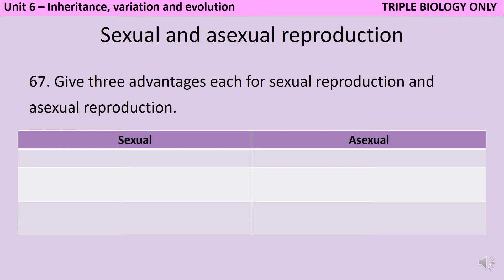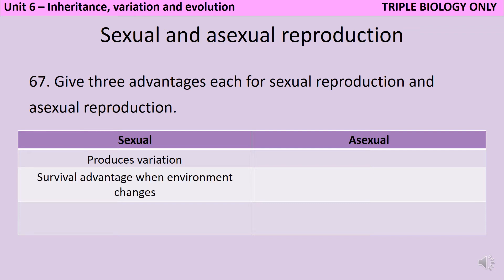Sexual reproduction produces variation in the offspring - not all of the offspring are clones of each other, there are differences between them. This is particularly important if you're living in an environment where the conditions are liable to change. As the environment changes, the variation means that some organisms have an advantage over others. So if you're producing lots of offspring and you don't know what the environment is going to be like, it's an advantage to reproduce sexually because there's a good chance at least one of your offspring will be very well adapted to that new environment.